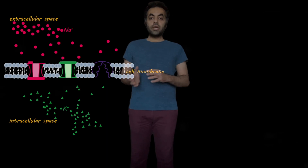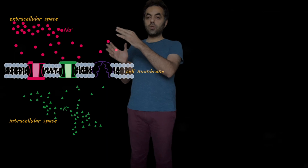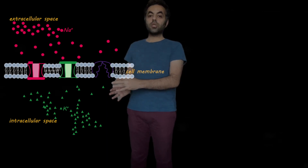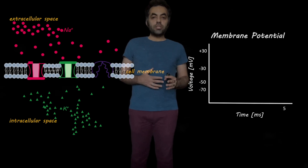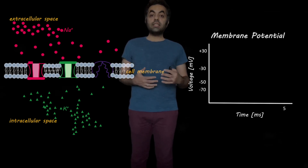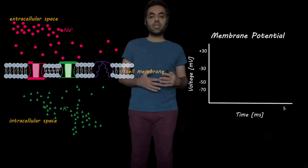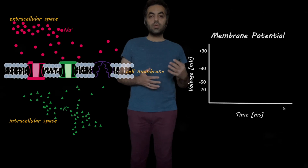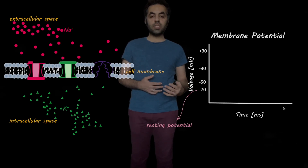Here you see a picture showing sodium ions more concentrated in the extracellular space and potassium ions more concentrated in the intracellular space. If we plot the membrane potential when a cell is in its resting condition, the membrane potential at that condition is minus 70 mV. It is called resting potential.